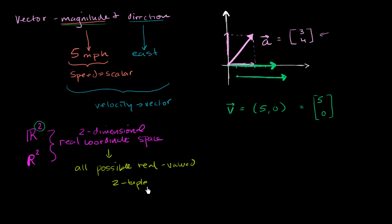So what is a two-tuple? Well, a tuple is an ordered list of numbers. And since we're talking about real values, it's going to be an ordered list of real numbers. And a two-tuple just says it's an ordered list of two numbers. So this is an ordered list of two real valued numbers.